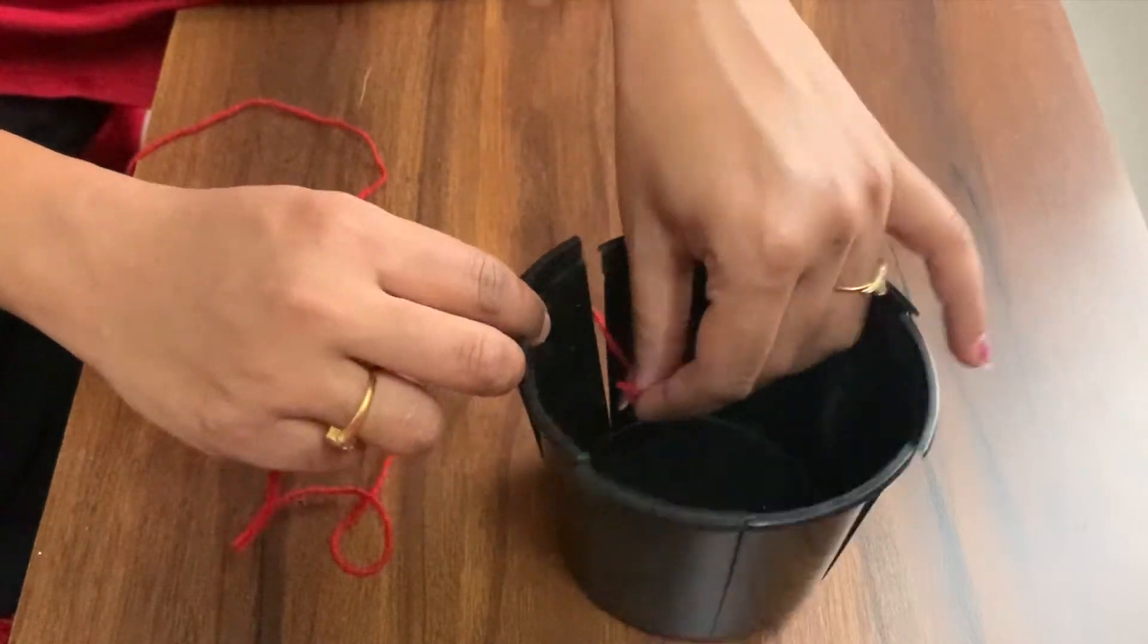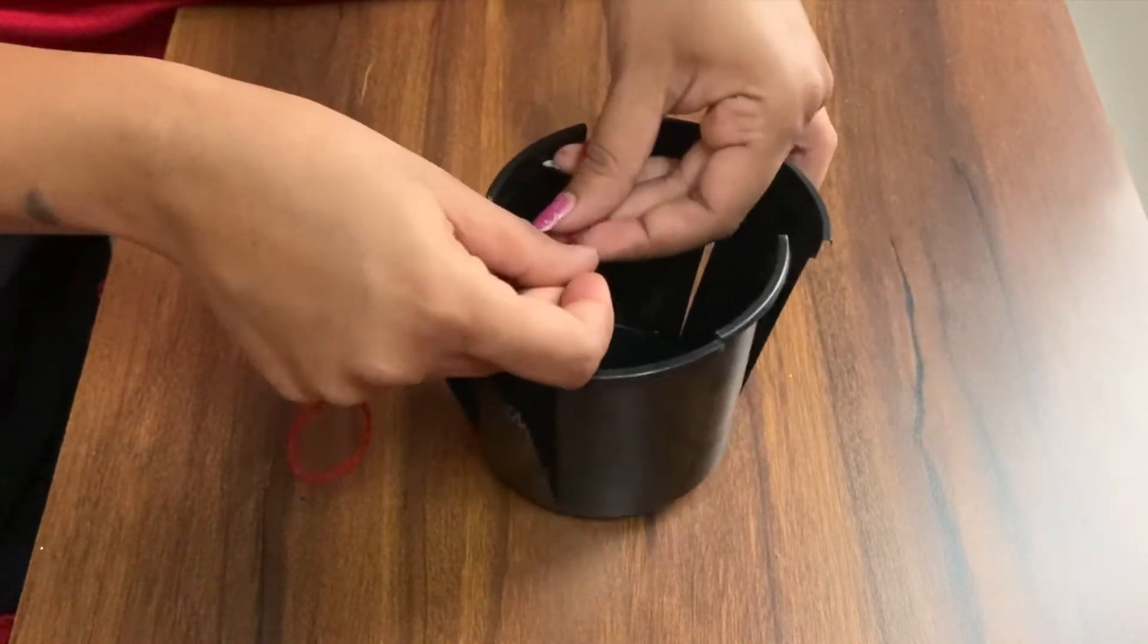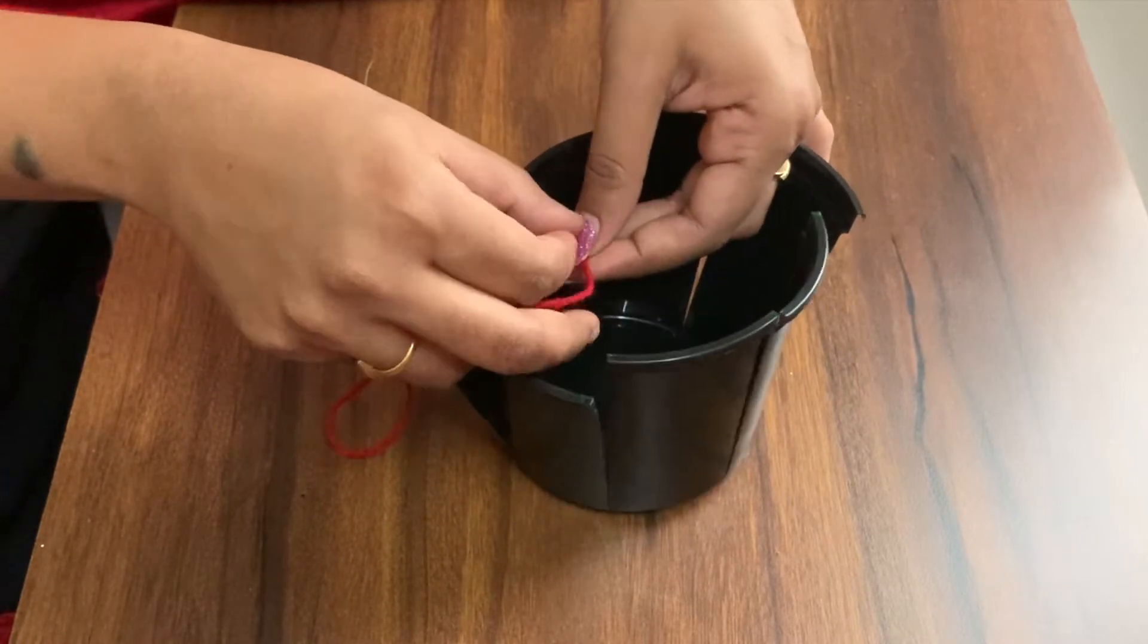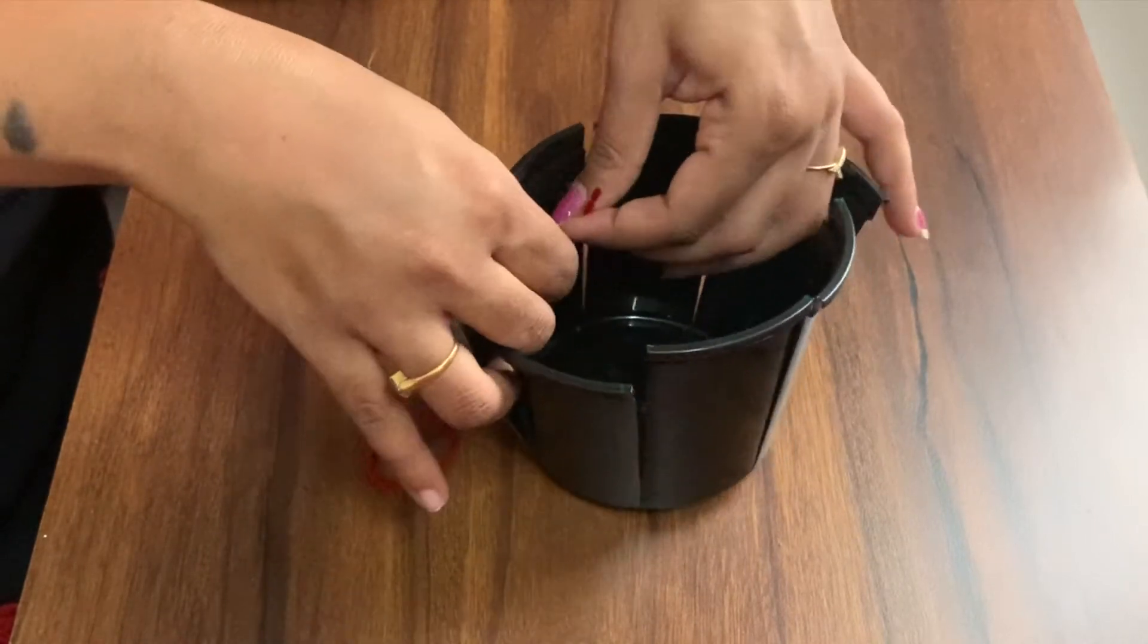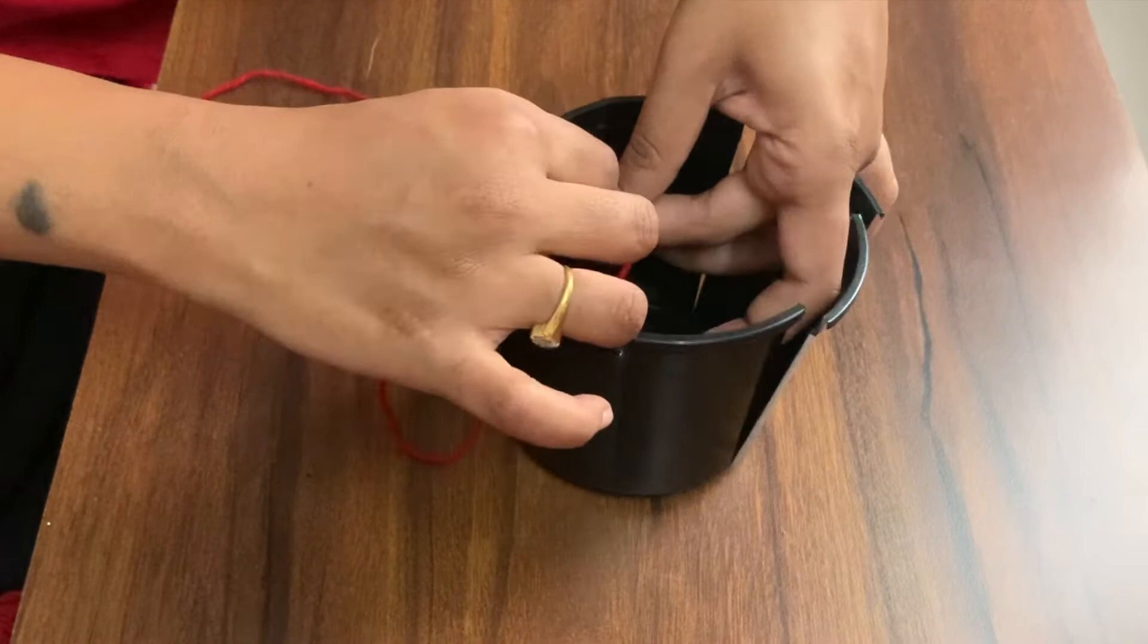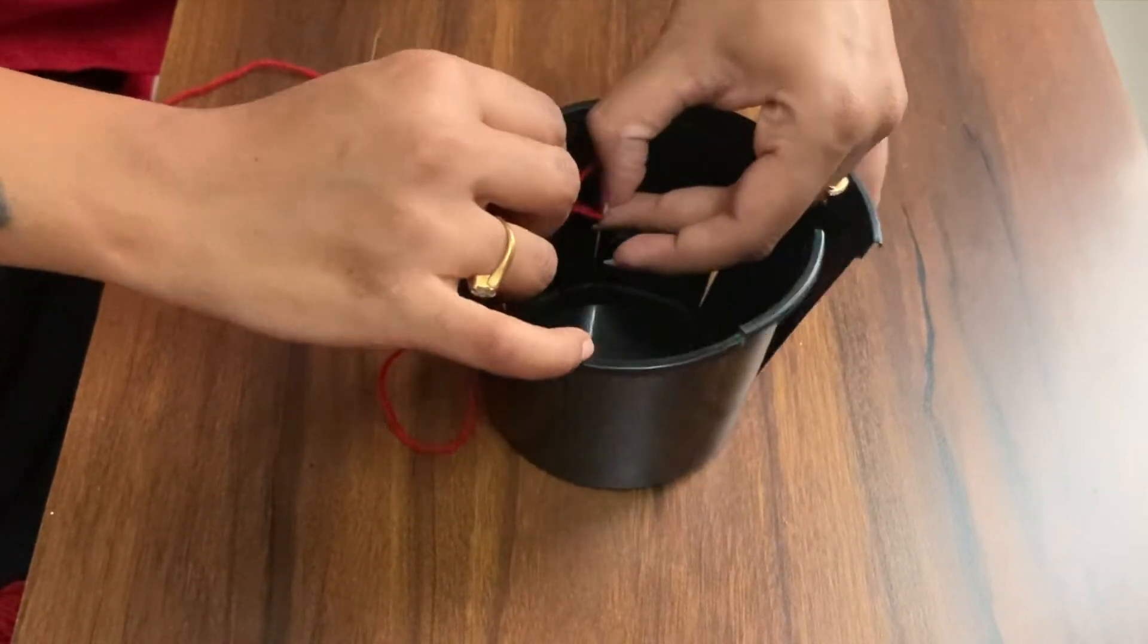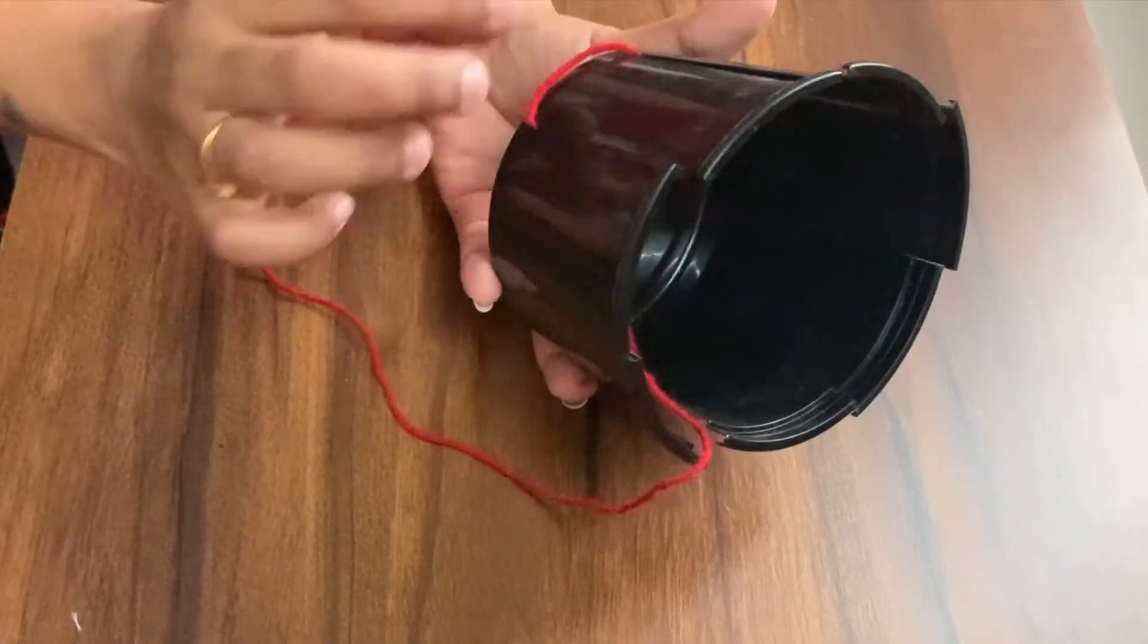Now basically we have to weave this. So we will take wool. First, we will put a knot in one strand. We will push it from the bottom. Keep the knot inside. Look, it looks like this.